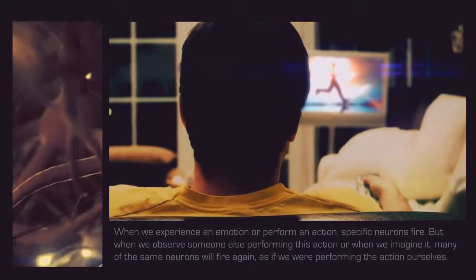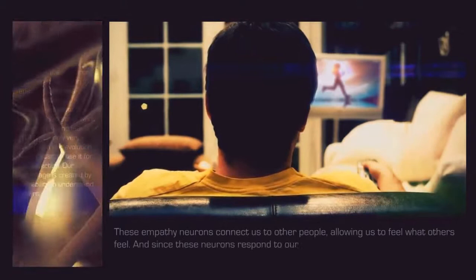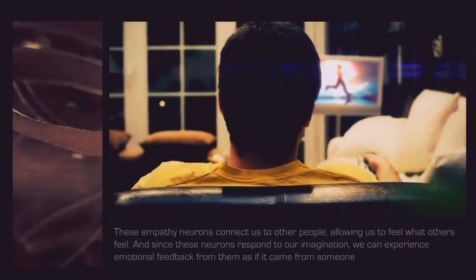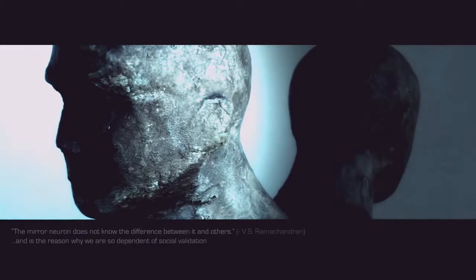These empathy neurons connect us to other people, allowing us to feel what others feel. And since these neurons respond to our imagination, we can experience emotional feedback from them as if it came from someone else. This system is what allows us to self-reflect. The mirror neuron does not know the difference between it and others and is the reason why we are so dependent on social validation and why we want to fit in.